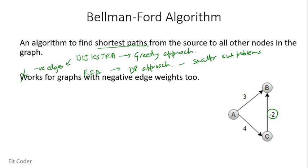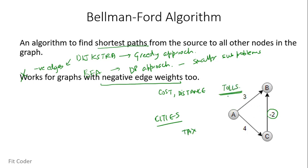Now an important question arises: what do we mean by negative edge weights? For example, let's say ABC is a network of cities and a person has to go to all the cities and collect some tax. On these roads there are tolls on which he has to pay some amount. Keeping in mind the expenditures like tolls and the amount of tax collected, the whole amount for a path can be either positive or negative.